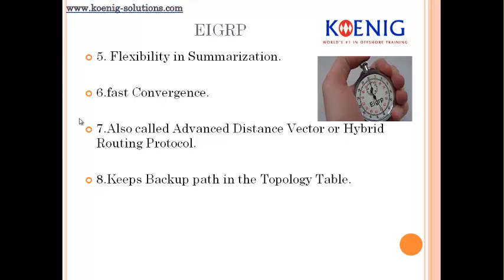EIGRP is also called the advanced distance vector routing protocol or hybrid routing protocol. It is called hybrid because it has the features of both a distance vector routing protocol and a link state routing protocol — it is as fast as a link state routing protocol, supports unequal cost load balancing, authentication, summarization, and VLSM. It is also as simple to configure as distance vector protocols like RIP, and uses the same loop prevention mechanisms such as split horizon, poison reverse, and triggered updates.